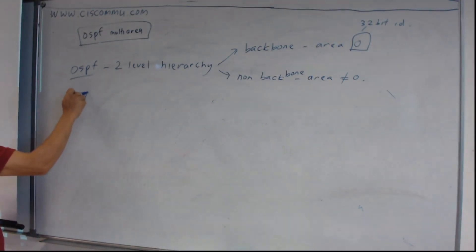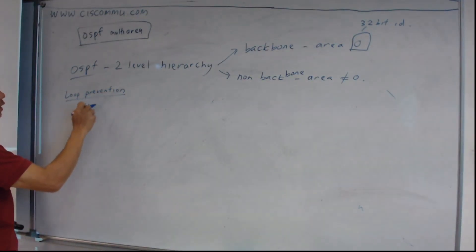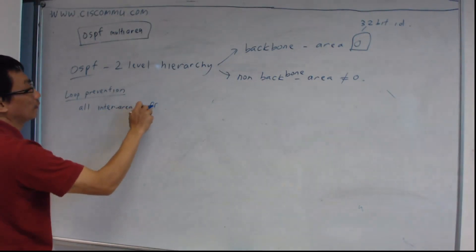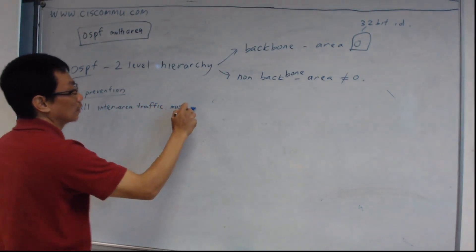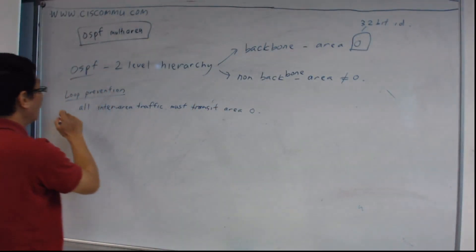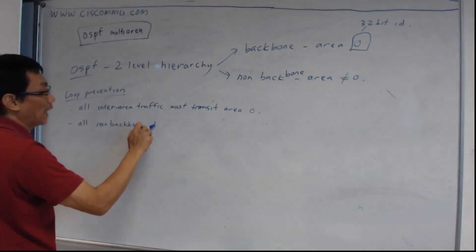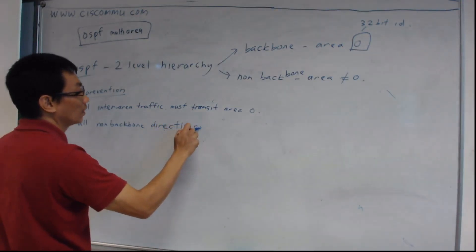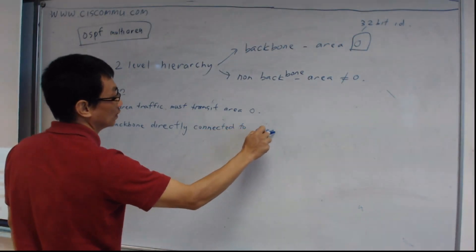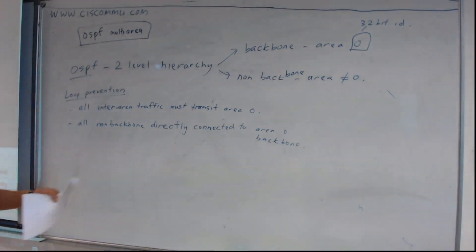So why do you have this structure? One of the mechanisms for loop prevention is that all inter-area traffic must transit area 0, and all non-backbone areas must be directly connected to area 0. These are the key rules.